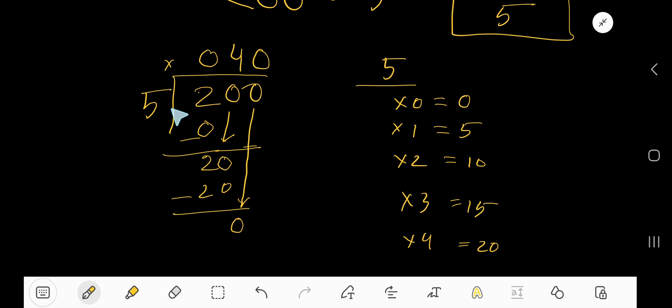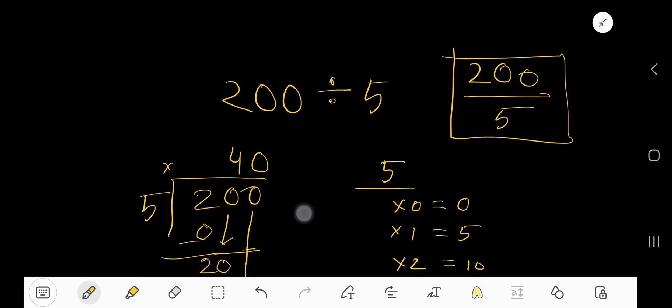Zero times 5 equals zero. Subtract to get zero. This zero doesn't carry value because it's on the left side of the digit. We're getting 40 - 200 divided by 5 equals 40.